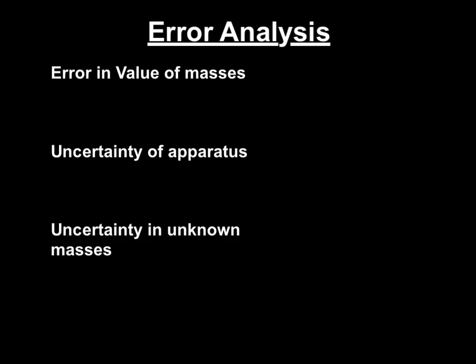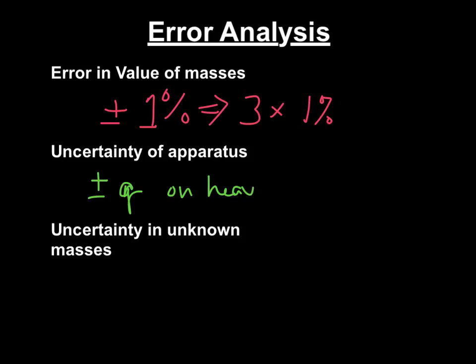There are a few places in this lab where error is. You can find error in the masses. Typically, the manufacturer reports this to plus or minus 1%. However, you have three, so you get three times 1% because you have three mass hangers. Next, you have uncertainty in the apparatus. This is plus or minus grams on your heaviest hanger. This is the step we described in that last little bit.